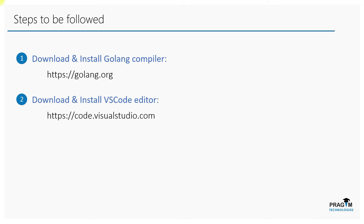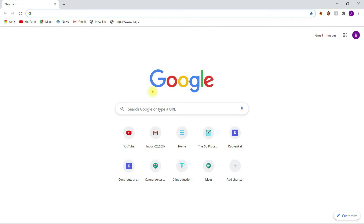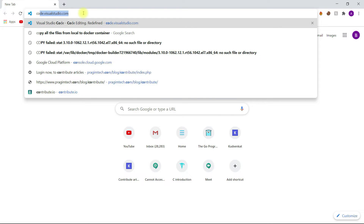Next, we have to download and install Visual Studio Code editor. This step is not mandatory — you can write a Go program in Notepad++ or any other editor such as Sublime or Atom. But if you want your development to be hassle-free, I recommend installing Visual Studio Code. The main reason I chose Visual Studio Code is because of its extensions. It has plenty of extensions available, including a lot of Go plugins which are helpful while writing programs. To download Visual Studio Code, open your browser and search for code.visualstudio.com.